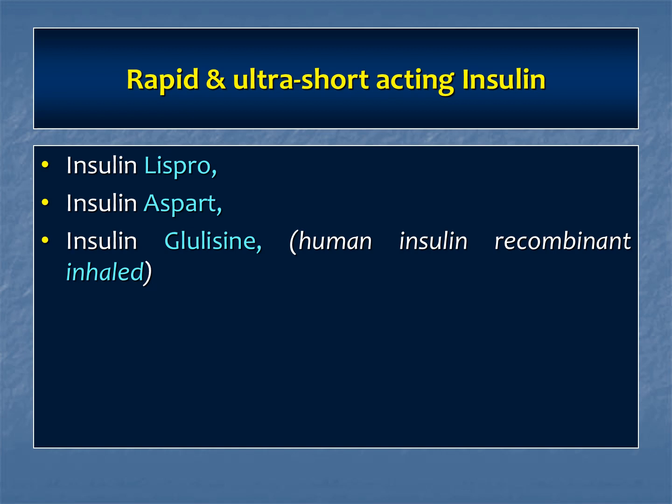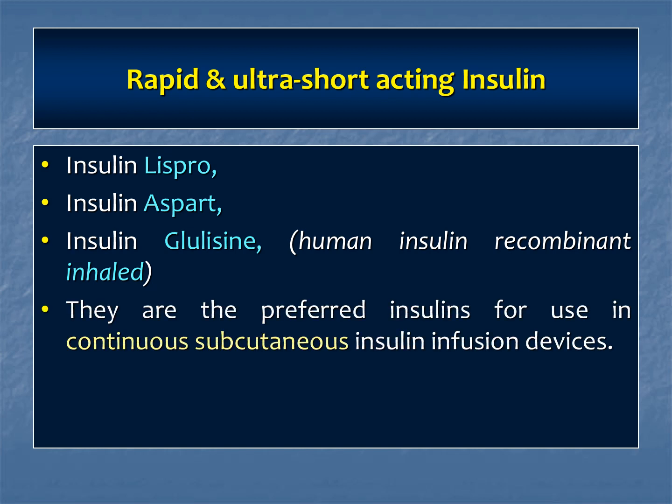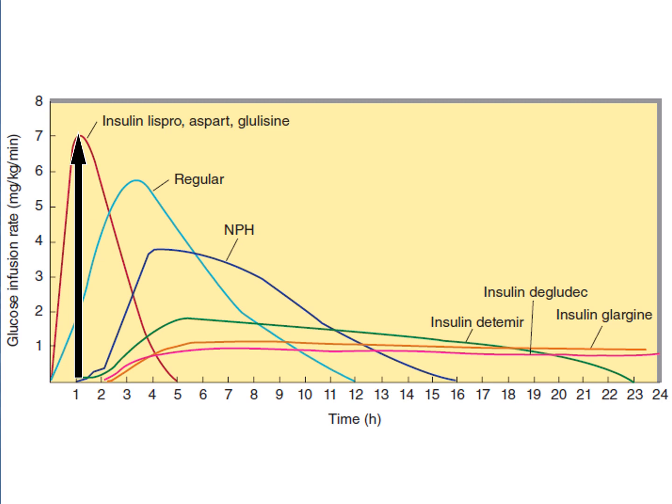The first group to discuss is rapid and ultra-short-acting insulin: Lispro, Aspart, and Glulisine. Human insulin in inhaled form as Glulisine is also available. These are the preferred insulins for use in continuous subcutaneous insulin infusion. The graph shows the peak insulin levels — Lispro, Aspart, and Glulisine — which are much higher. These conditions occur post-prandially, so the main use is to reduce post-meal blood glucose rise.